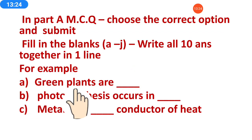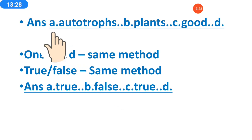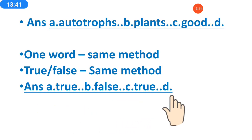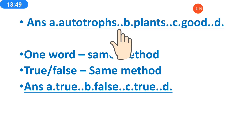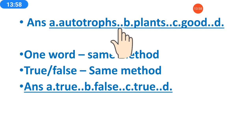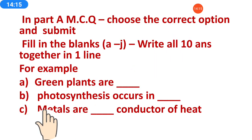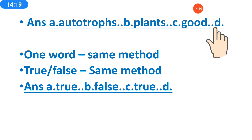How you will write? Suppose the first answer is autotrophs — this is A question. So in that line, write: A.autotrophs. Then for the next answer — photosynthesis occurs in plants — after the first answer, put two dots, then B.plant, then two dots, then C.good for metals are good conductor of heat. You can put a comma or two dots to separate answers, or leave a space — but follow that pattern. In this way, all 10 answers you will write in this manner in one line.